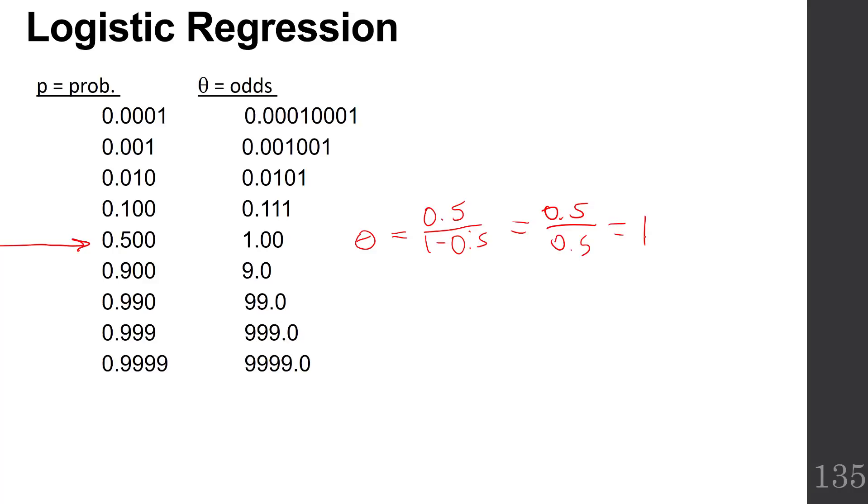You can figure out the rest of the odds from this table by doing that same calculation. If the probability is really tiny, the odds are really tiny. At a probability of a half, the odds are 1. And as the probabilities get bigger, the odds grow much, much bigger.